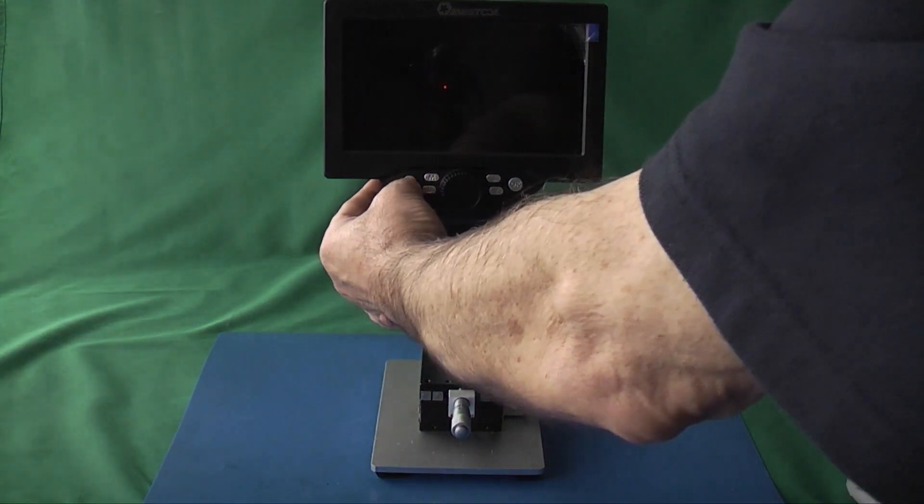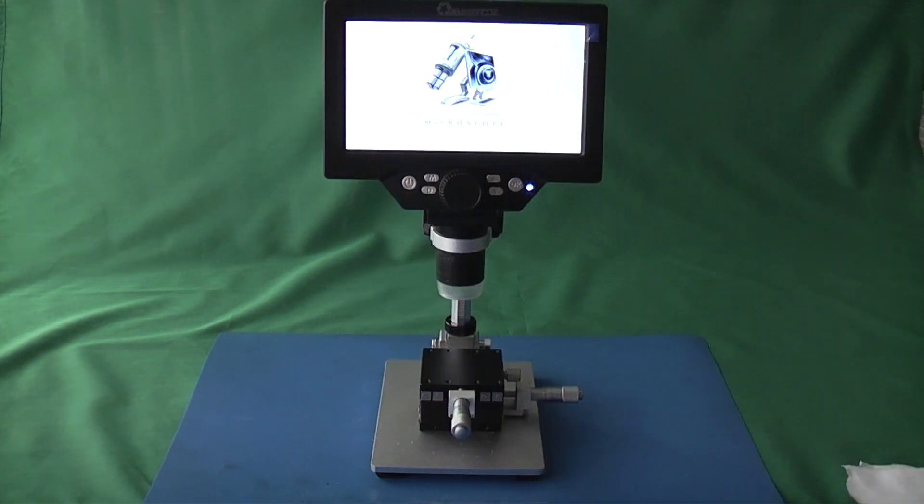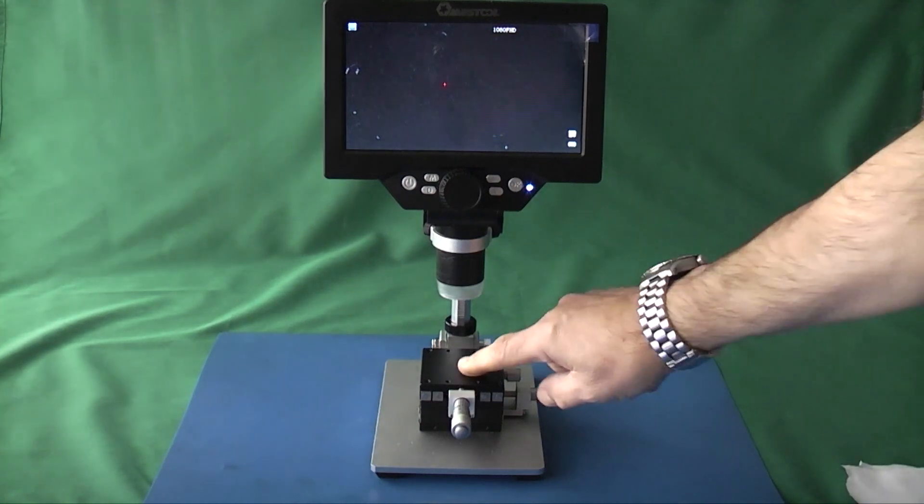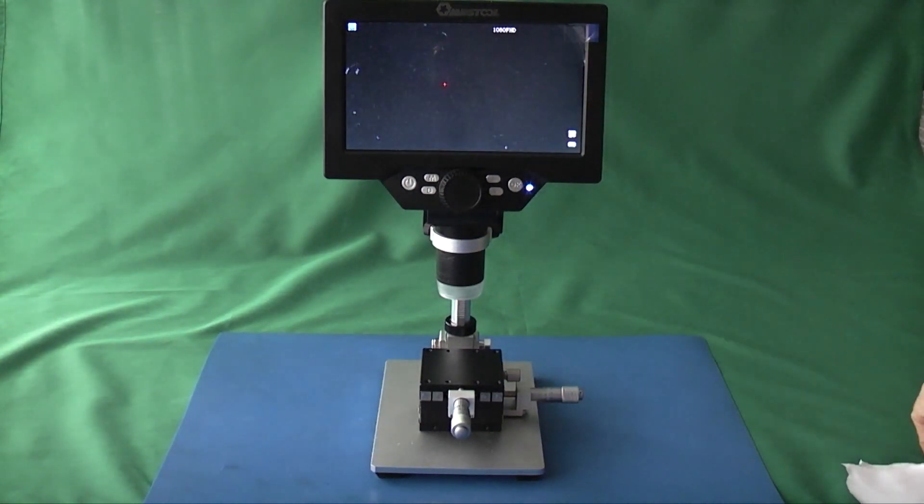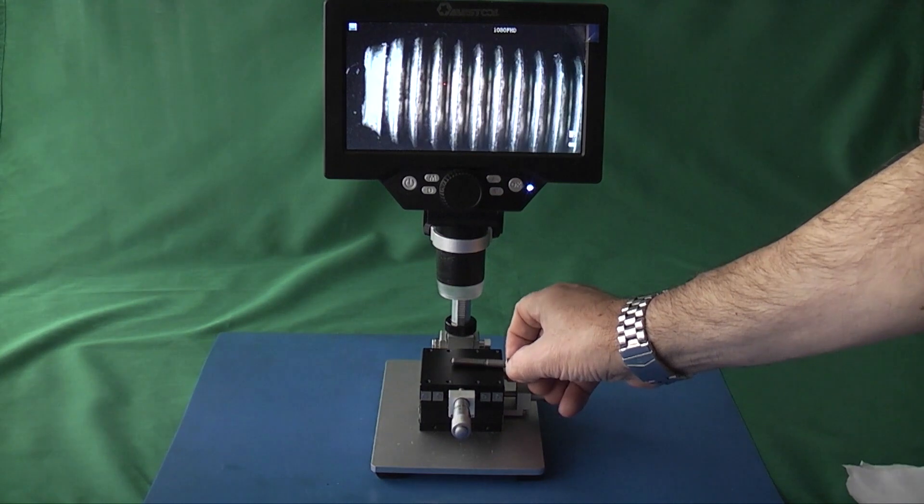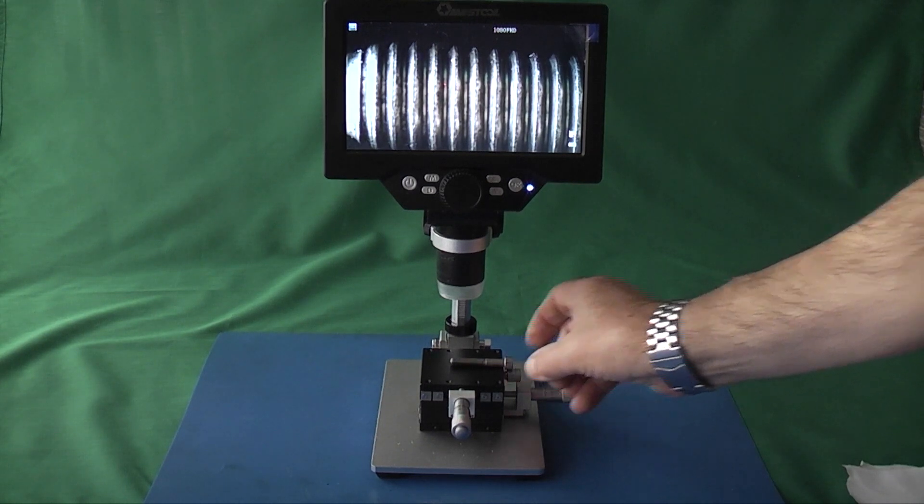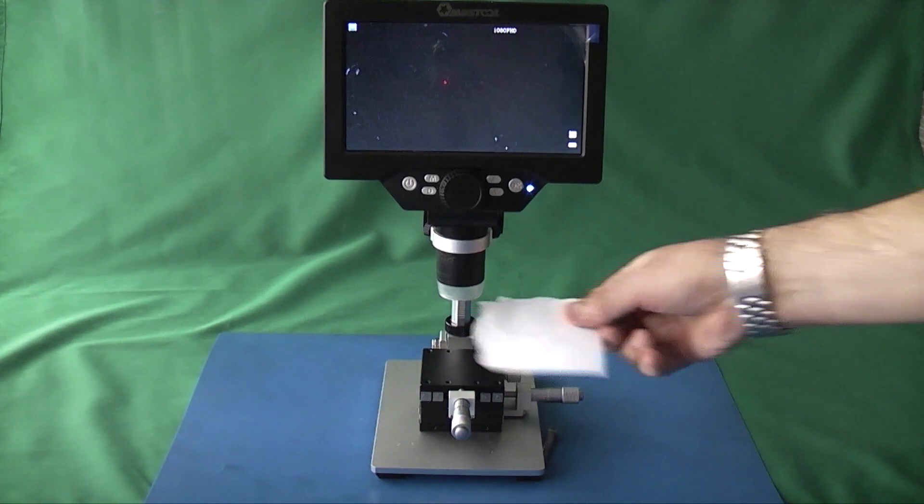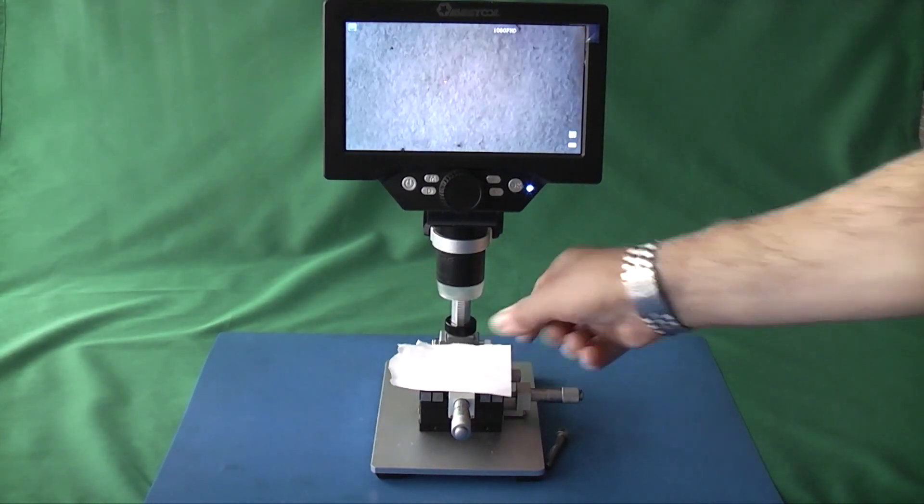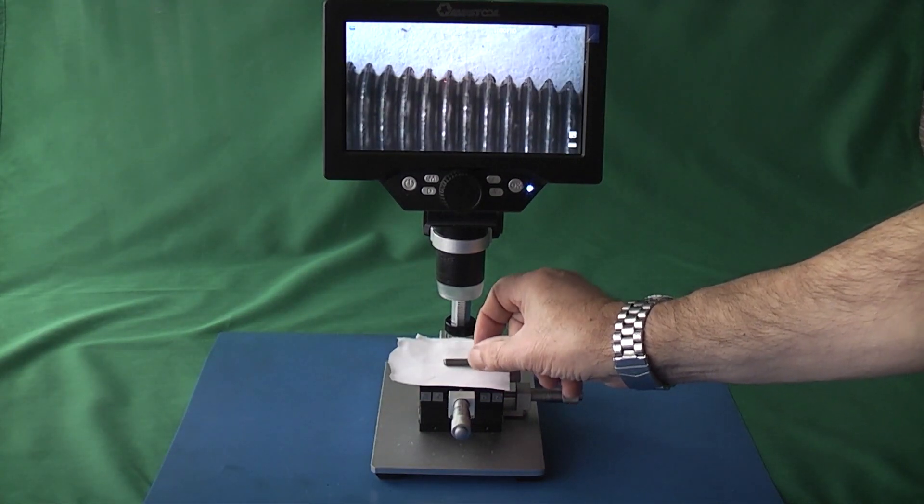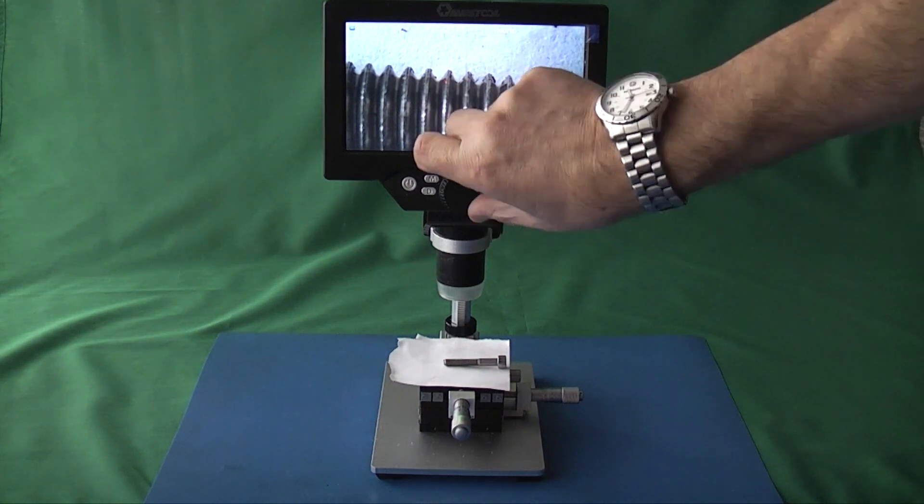I'll switch the microscope on. Let's see table magnification. I want to put a screw on there. I think that's a 5mm cap head. Now to make the contrast stand out between the background and the screw, all I'm doing is putting a piece of white paper on the top and put the screw on the top of the white paper. Focus that in.